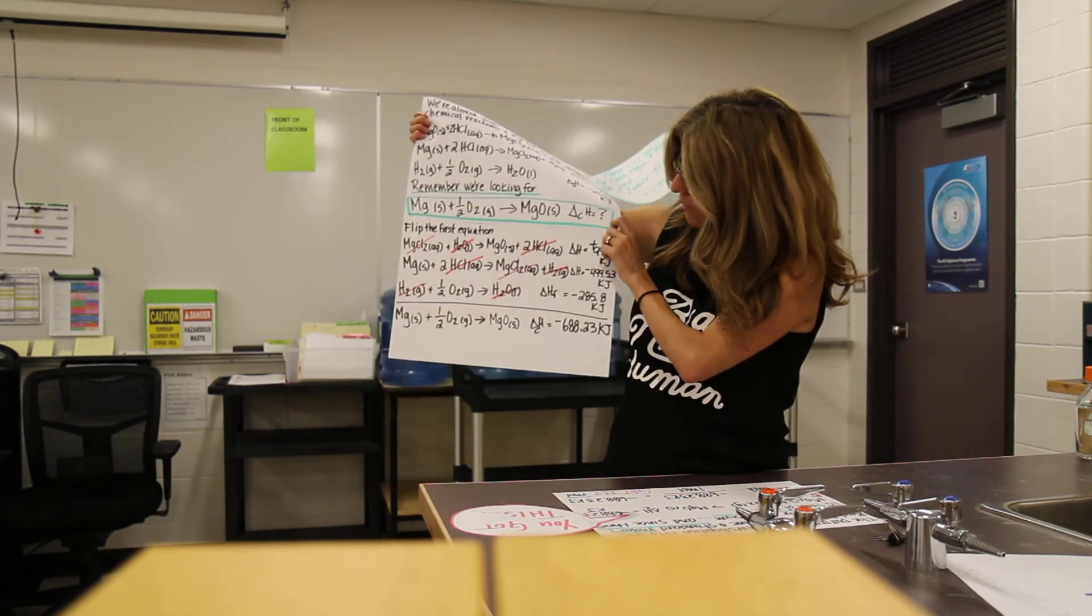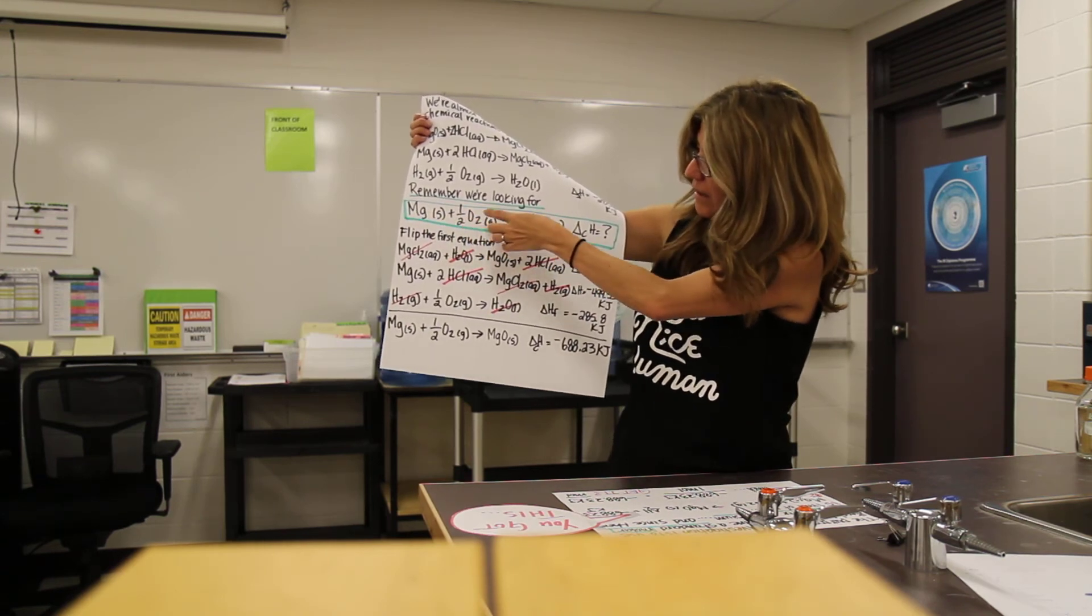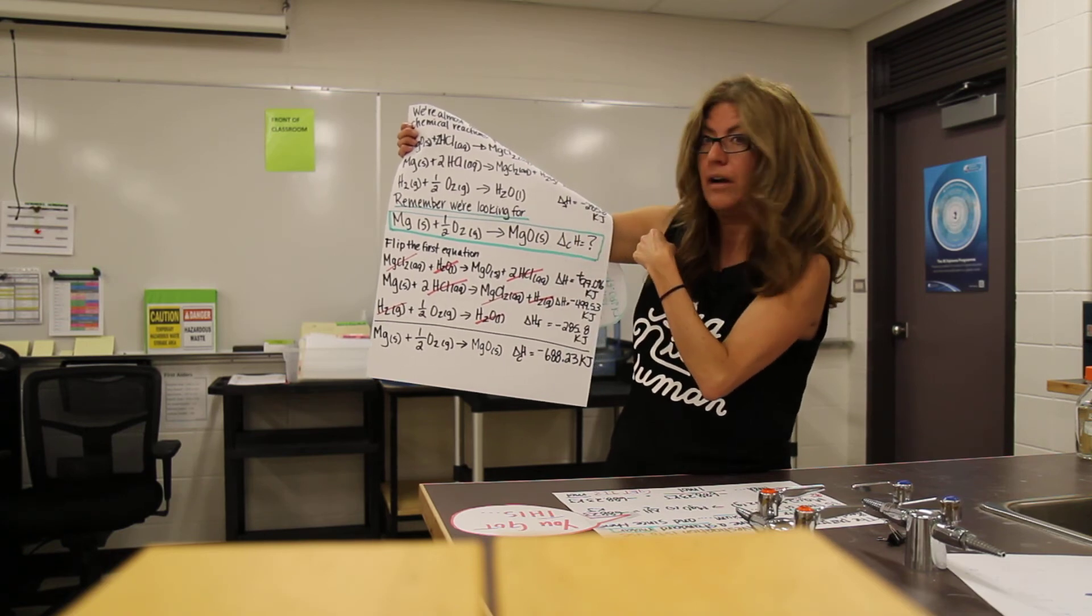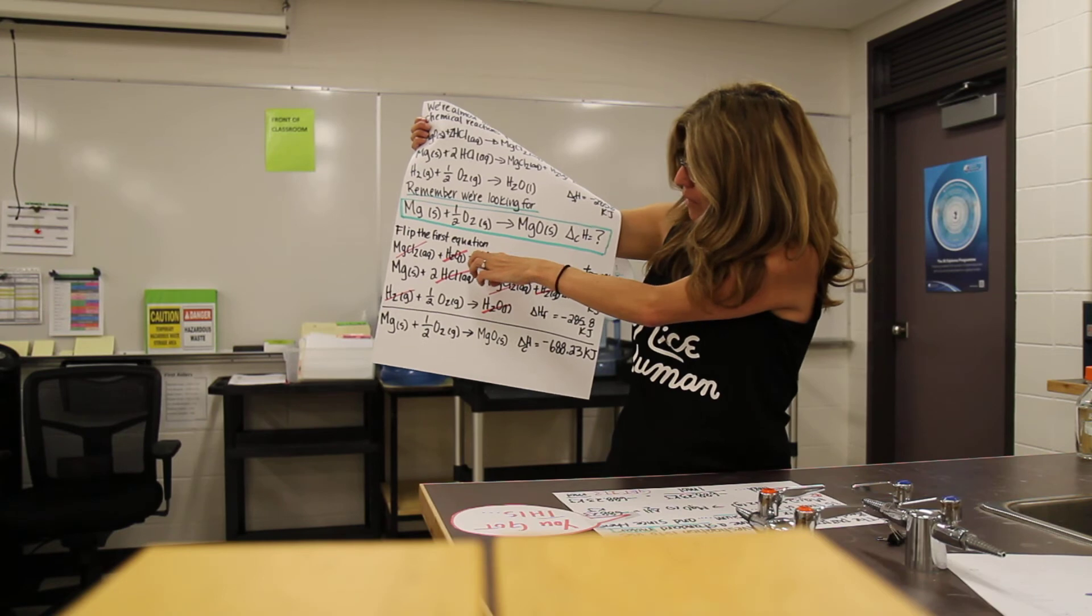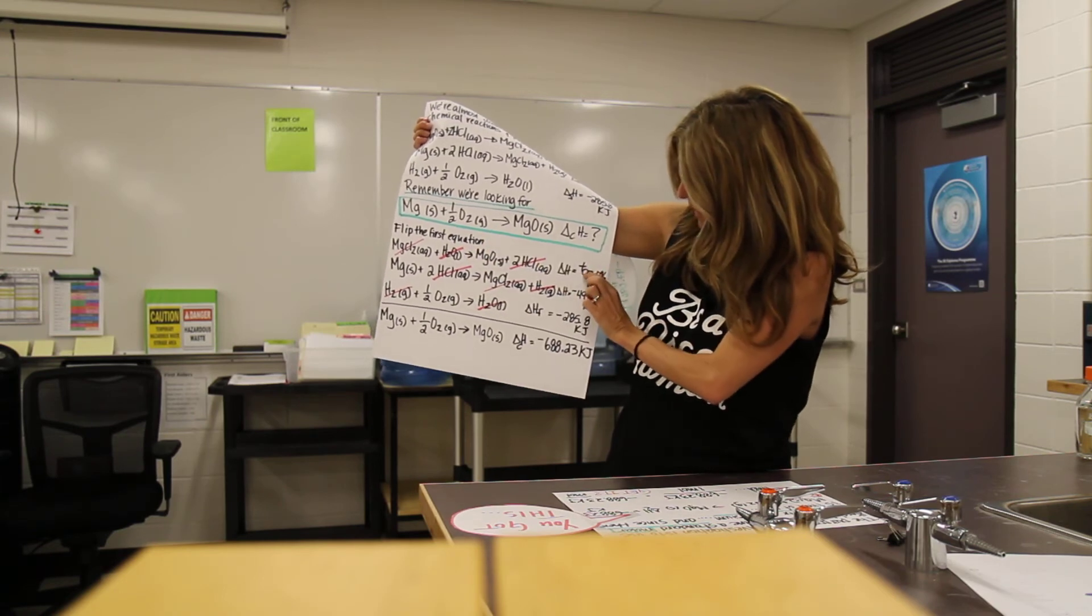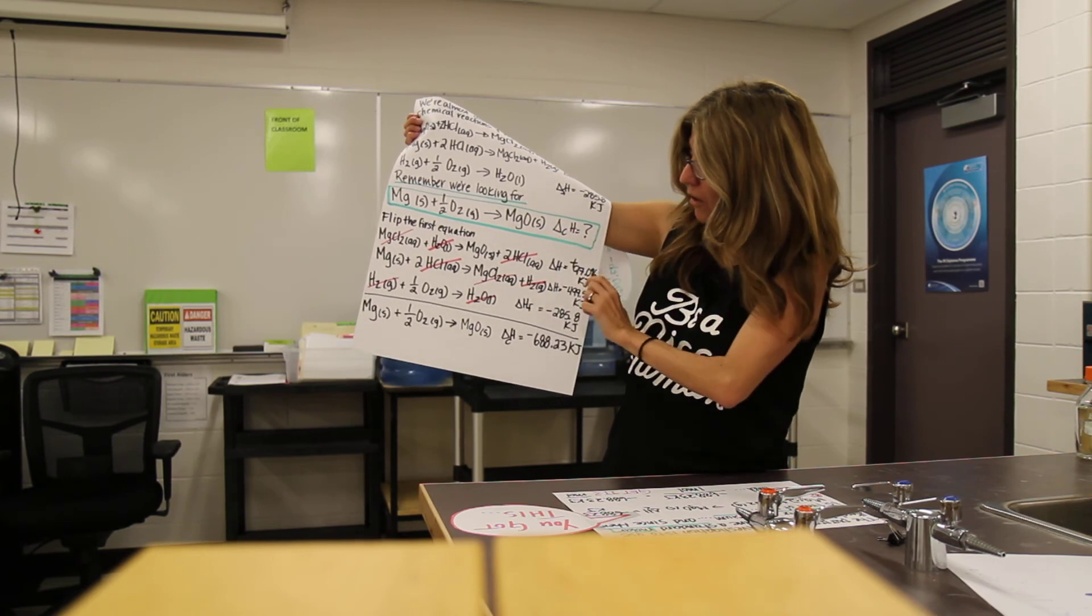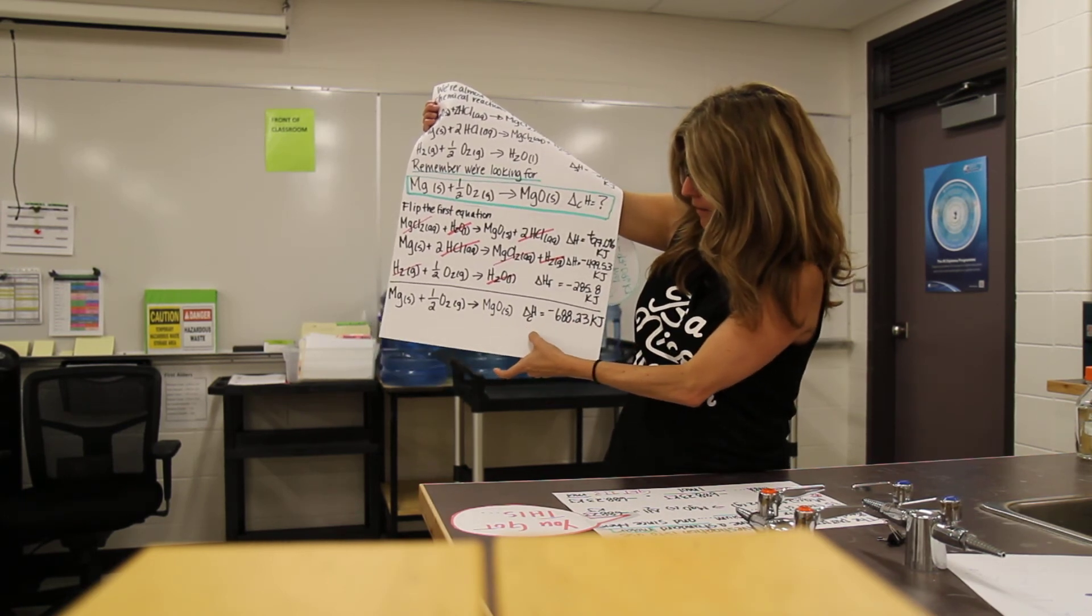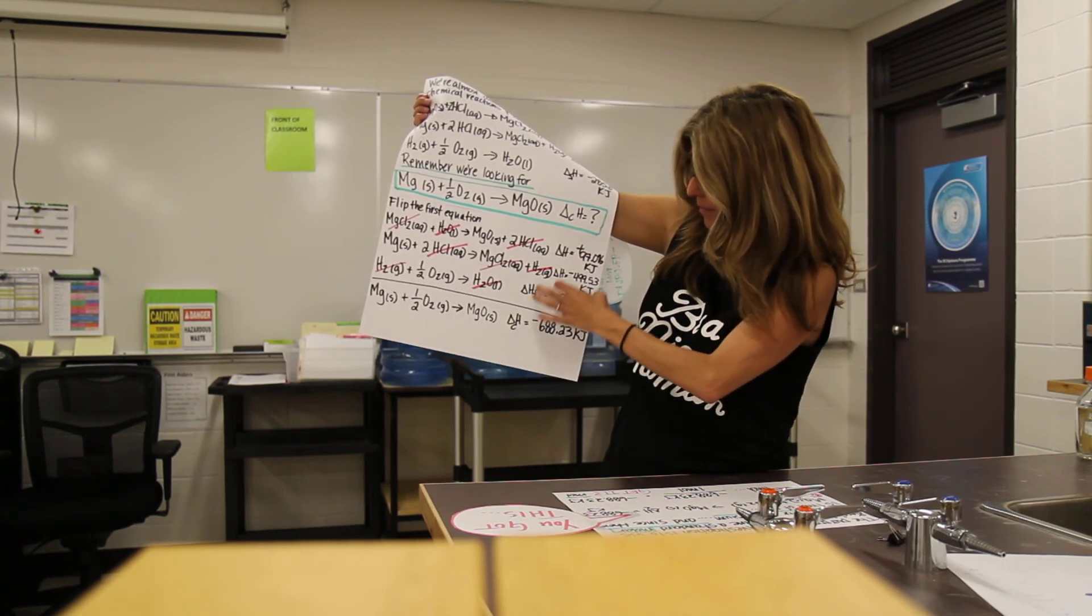So now what we have to do is go ahead and flip the first equation, because we want to make this magnesium plus 1.5 O2 yields magnesium oxide, and we have to find the delta H of combustion, right? The change in enthalpy of combustion. So I'm going to flip the first one. If I flip the first one, I have to change the negative to a positive. The rest are the same. I cancel all the reactants and products that are the same to get my final answer of negative 688.23 kilojoules, because I'm going to add these all up.